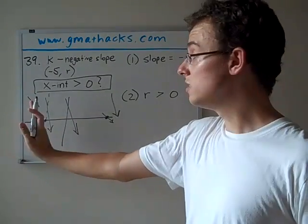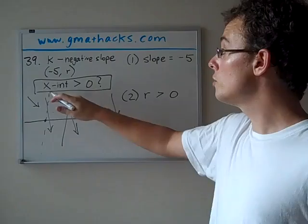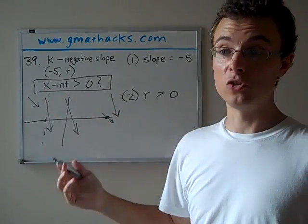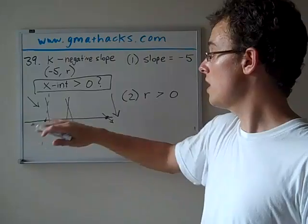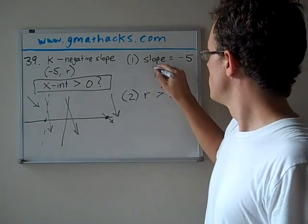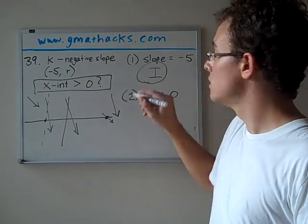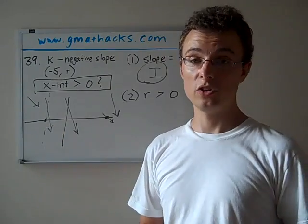Point being, in one case it's less than 0. In one case it's greater than 0. So do we know whether the x-intercept is greater than 0? No, we don't. We just looked at an example where it's negative and an example where it's positive. So we're going to put an I right there, just to remember for ourselves that statement 1 is insufficient.